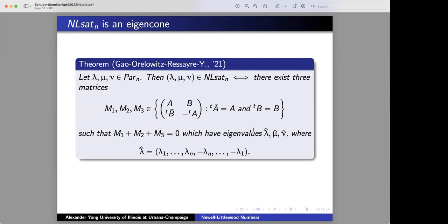Now, what about this connection to eigencones or eigenvalues of matrices? The following result together with Nicola Ressouere really is a corollary of our theorems that I'll state later. But since I didn't tell you what the theorem is, it's kind of hard to call this a corollary yet. So let me just state it as a theorem. You have three partitions lambda mu nu. You are in NL sat, so I can say that if and only if there exists matrices M1, M2, M3 of this weird form, who sum to zero and have eigenvalues essentially lambda mu nu.